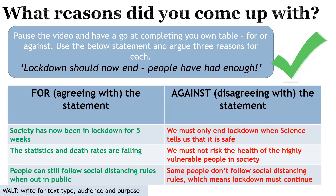My thoughts were: on the left-hand side in green, for agreement with the statement — society has now been in lockdown for five weeks; the statistics and death rates are falling; people can still follow social distancing rules when out in public. But I do need to think about the other side: we must only end lockdown when science tells us it is safe; we must not risk the health of the highly vulnerable people in society; and some people don't follow social distancing rules, which means lockdown must continue. Email me, Ms. Mitchell Brady, and let me know if you got any of those ideas.